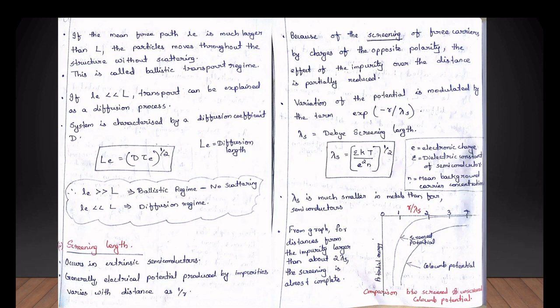If electrons are attracted to the nucleus, they are forming a strong bond and the atom is stable. The nucleus and electrons interact, and in addition to the electrons, we can use a screening length.